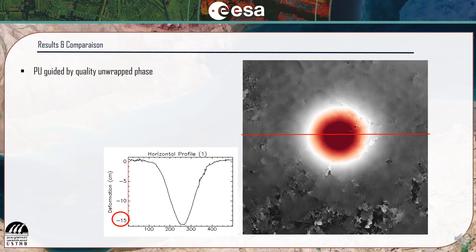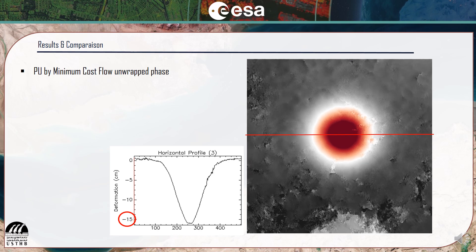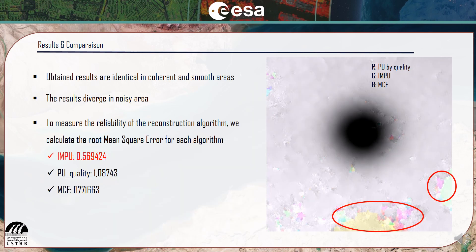Then, we compared our method with the phase unwrapping guided by quality algorithm and the minimum cost flow algorithm. From observing the horizontal profiles, the results are identical. So, we used color composition to highlight the differences, which are observed on incoherent areas. Finally, for quantitative comparison, we calculated the mean square error for each method. From this comparison index, we can see that our method has a better reconstruction even in incoherent areas, with a minimum error.